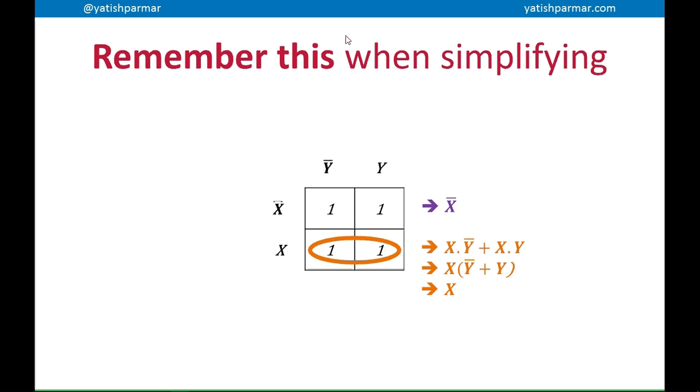The bottom row is pretty much the same. You can see you've got x and not y or x and y. X is the common input, so we can simplify it down. And not y plus y is the same as 1. So therefore, the result is x. The same applies to the columns. And you should remember these when you're simplifying expressions, because it strips out a lot of unnecessary inputs in your conditions.